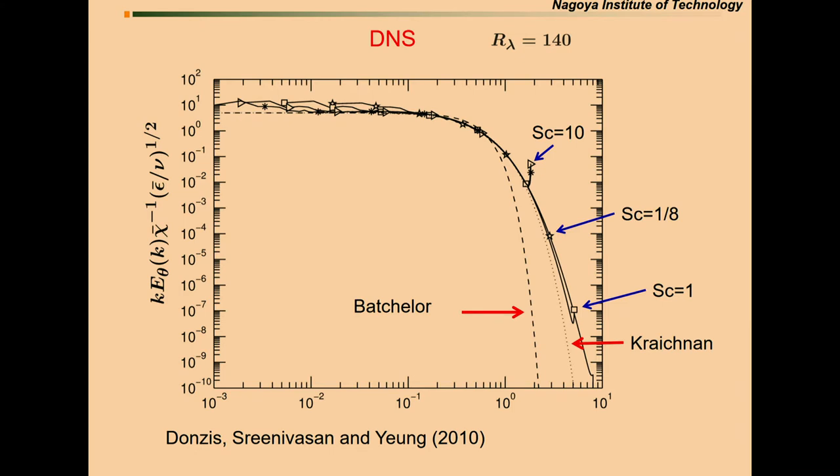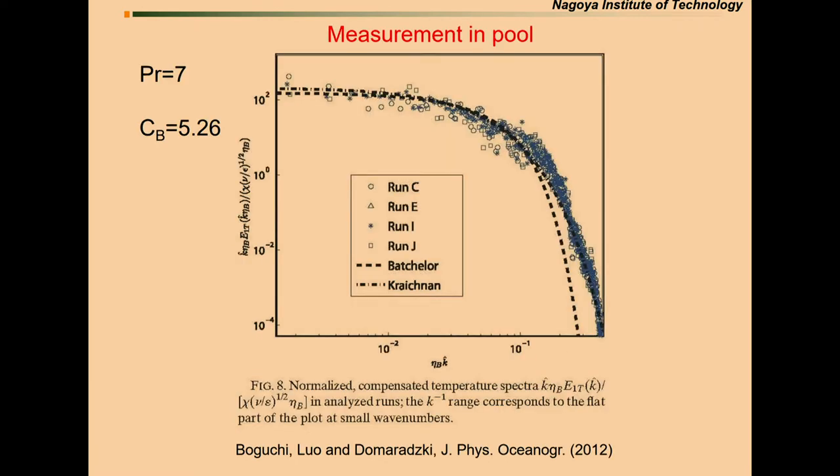Now, let's look at the DNS data. This is the data by PK's group, Diego, Zorzini, and Yeung. For the case of Schmidt number 1000, the tail is not long enough. But it is apparent that the DNS curve decays quite slowly than the Batchelor. Or, Batchelor spectrum decays quite fast. And Kraichnan spectra is not the same, but close to the DNS.